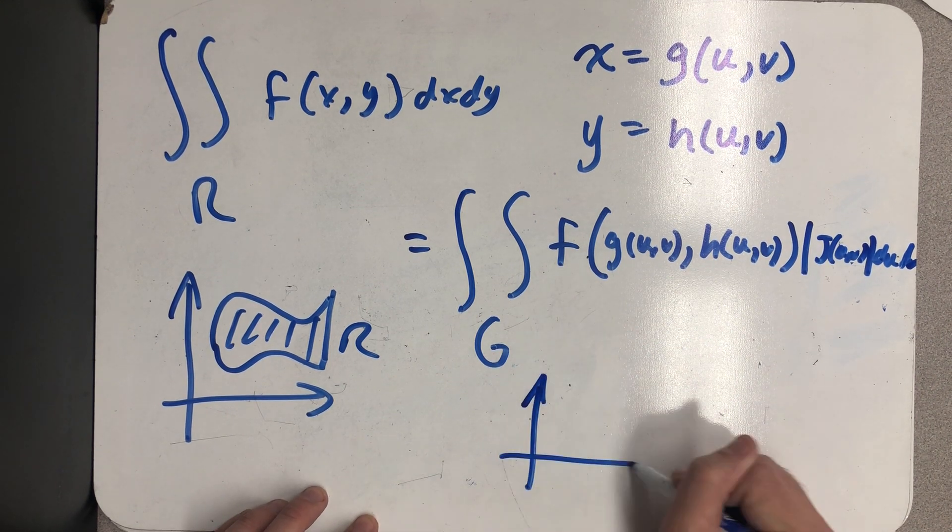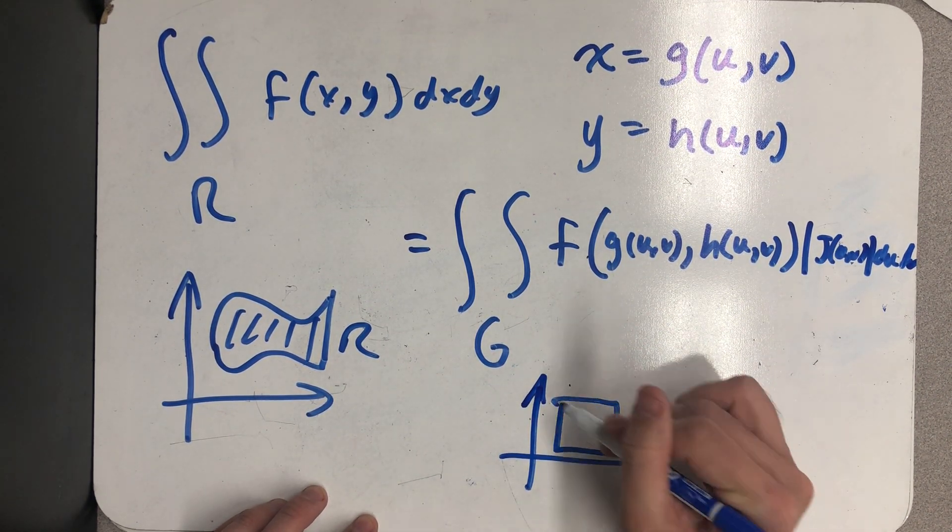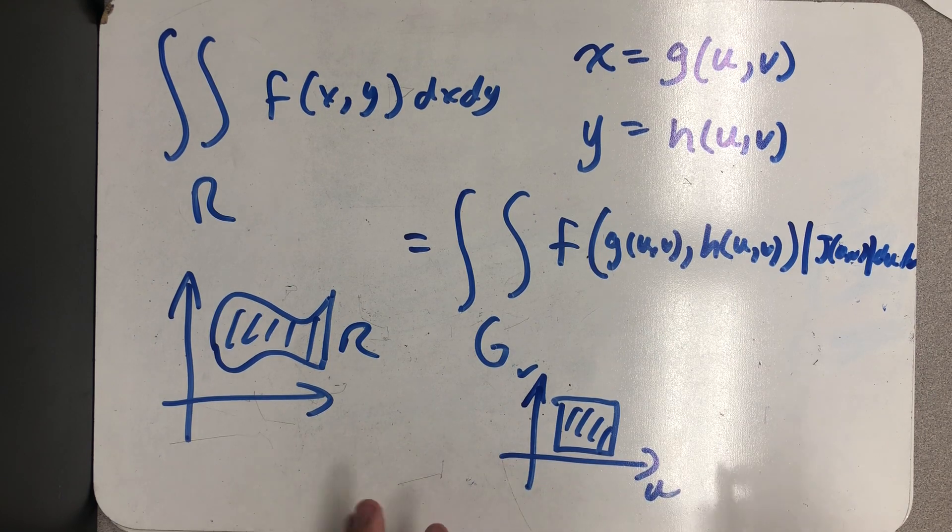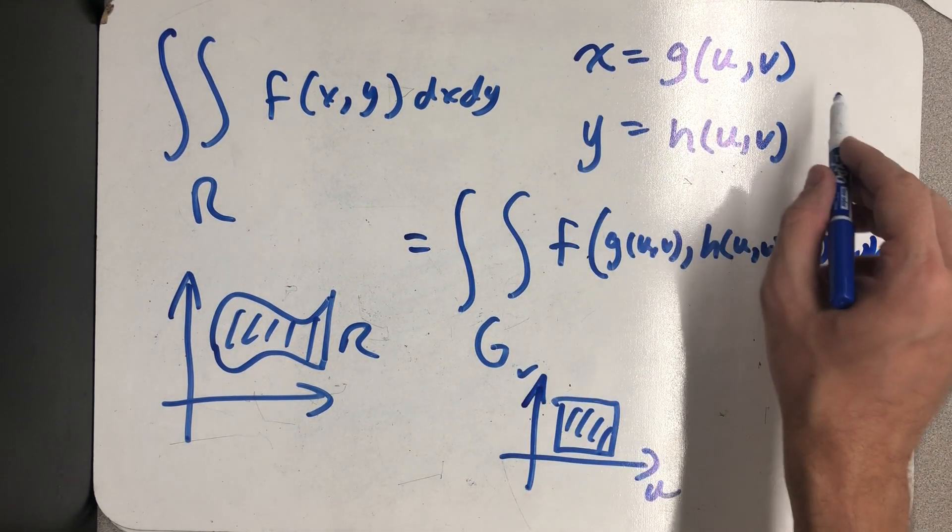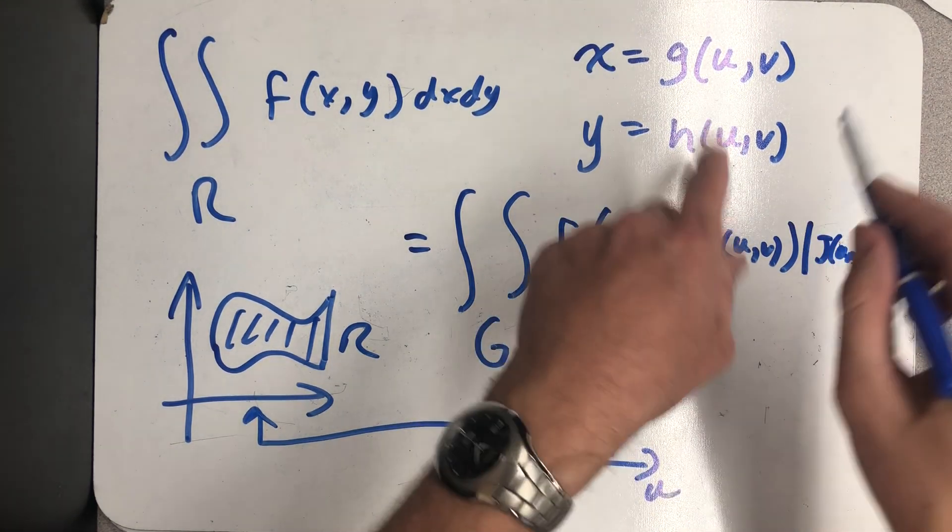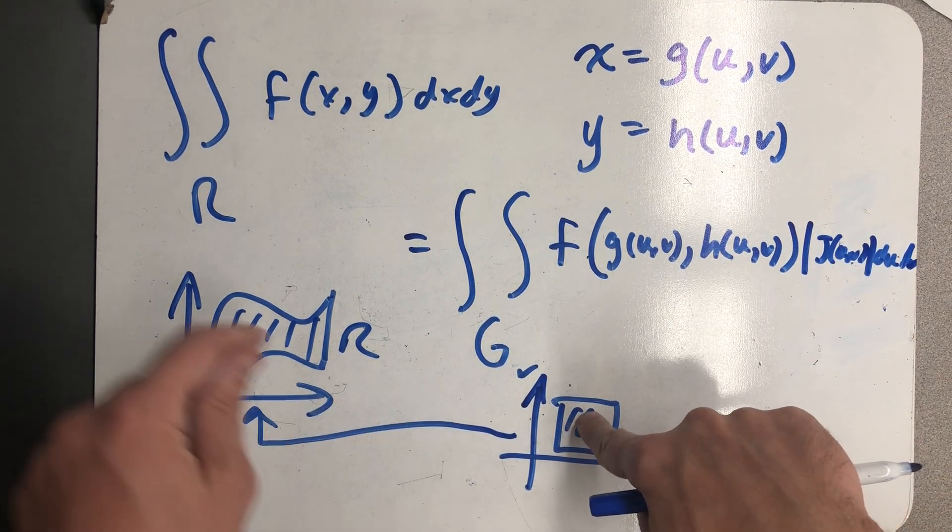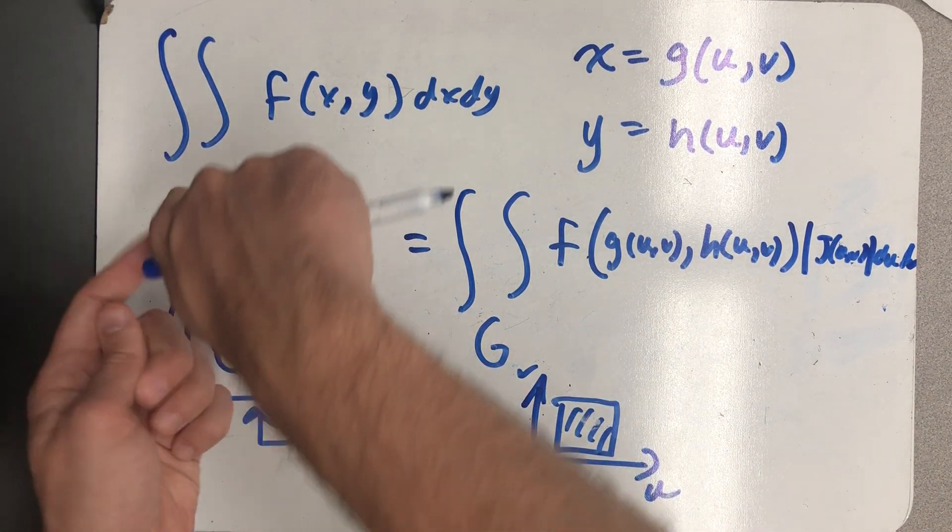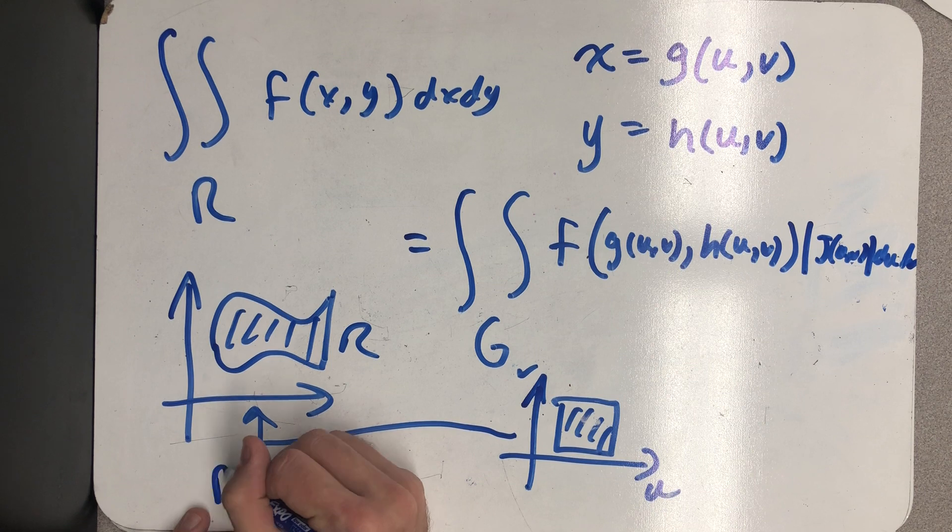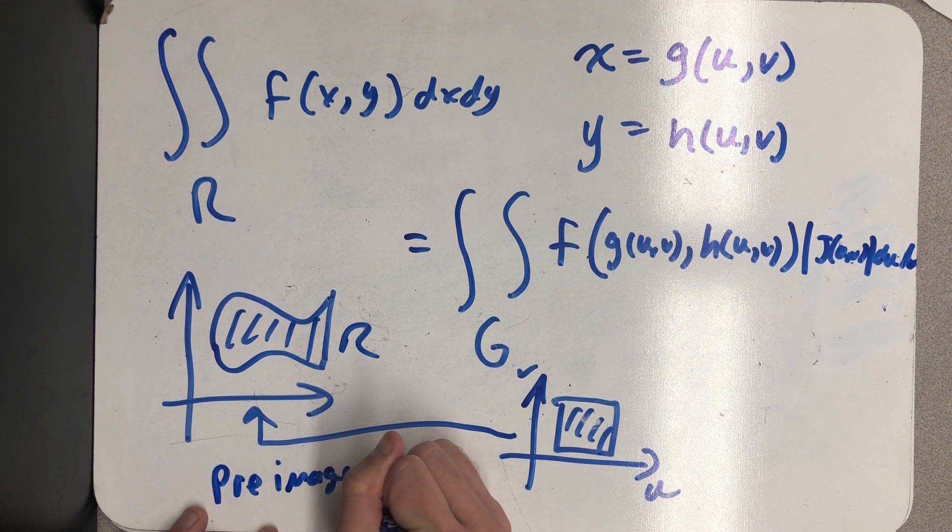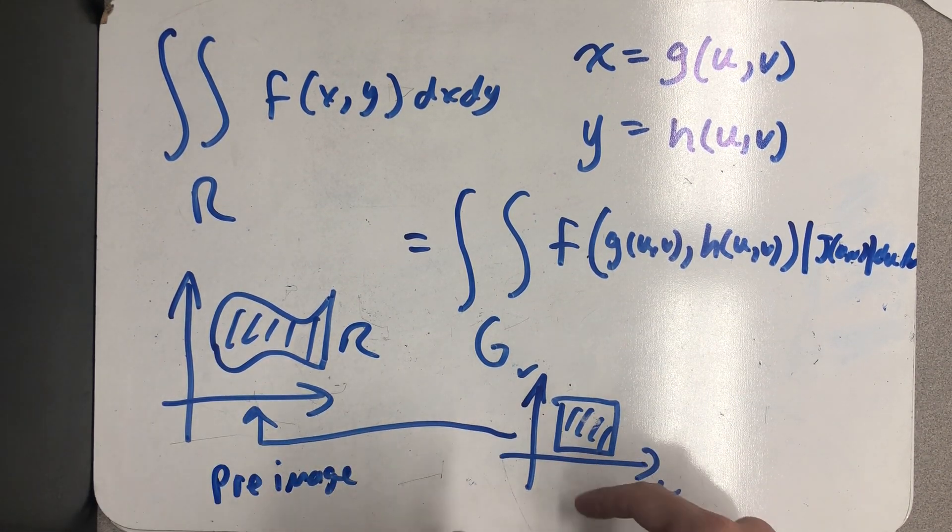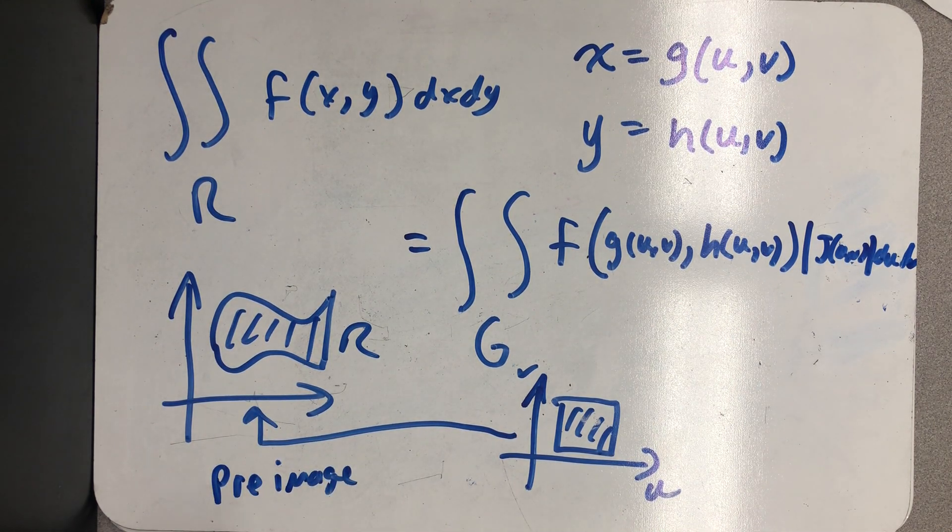So G is in a uv plane. And I've drawn a rectangle here because the goal sometimes we have is to make our region of integration better. The substitution x equals g(u,v), y equals h(u,v) takes me back to this region. u and v are my independent variables there. So I plug in a u and v and I get out an xy. So it's kind of funny because we're going this way, but our map's designed to take G back to R. And for that reason, sometimes you'll hear this referred to as the pre-image of G. When I plug points into a function, I get out an image. Well, this is the pre-image of that function.